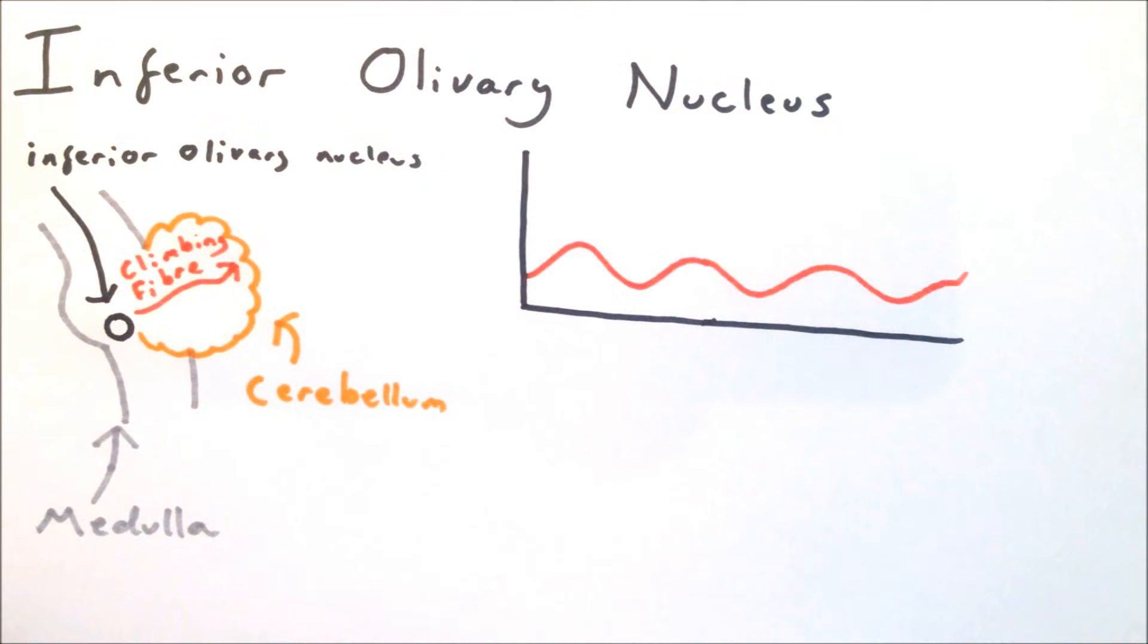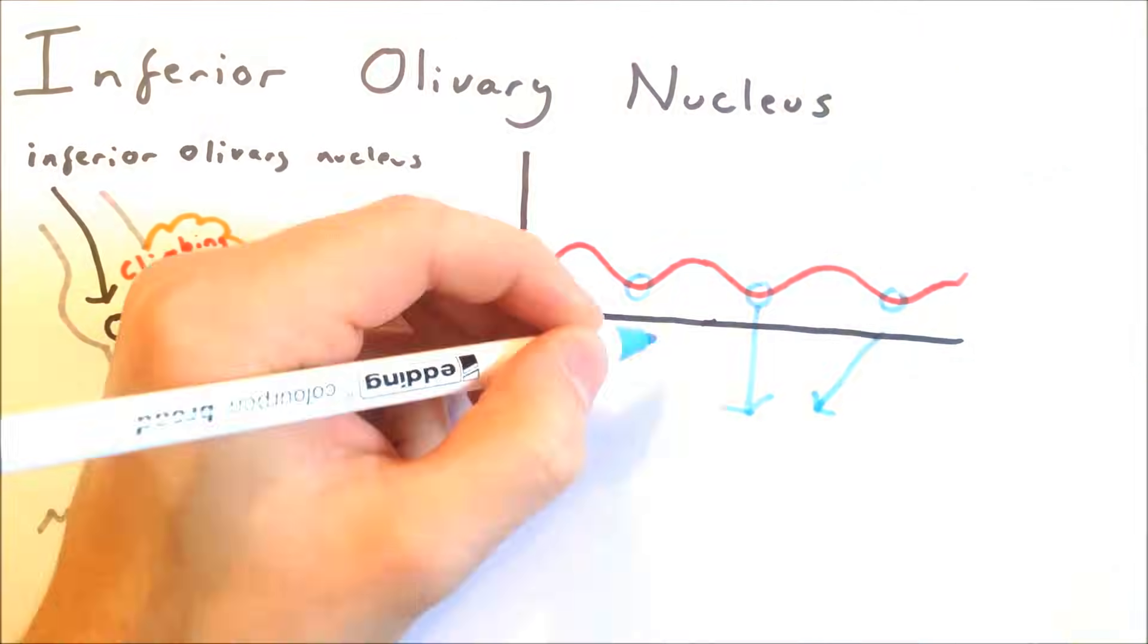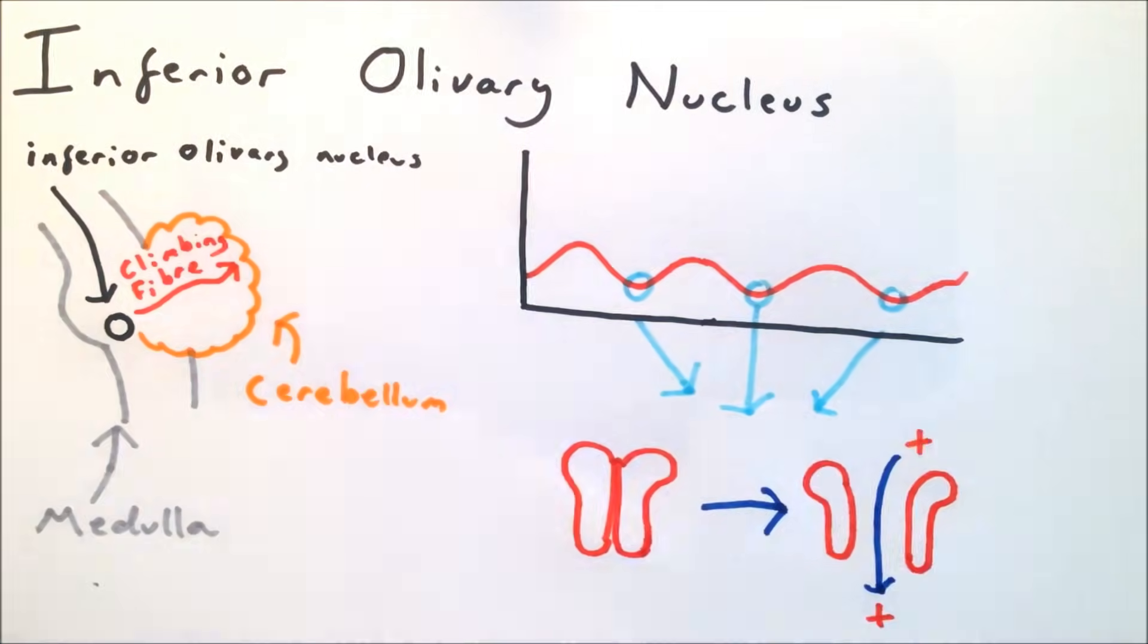Individual inferior olivary nuclei neurons have an intrinsic sub-threshold oscillation of their membrane potential. This is due to the existence of special ion channels, which open and close rhythmically as the voltage changes within the neuron. This enables these neurons to fire spontaneously, in a rhythm between 1 and 10 Hz.